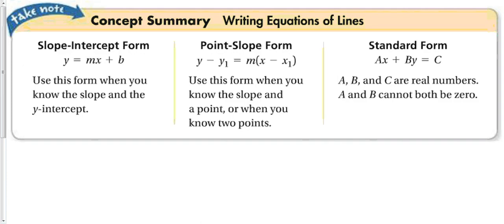Summary of the three forms: Slope-intercept form (y = mx + b) is best when you know the slope and y-intercept and is usually the easiest to graph from. Point-slope form is used when you know the slope and a point, or two points — slightly easier for writing an equation from two points. Standard form (Ax + By = C) is used when A, B, and C are real numbers, often used with a graphing utility.